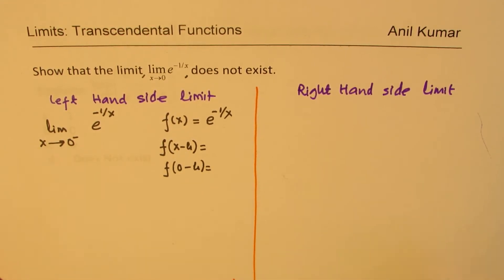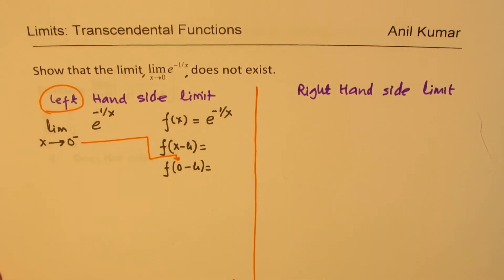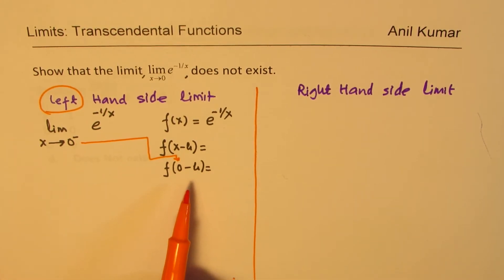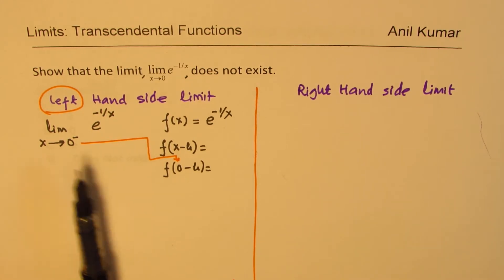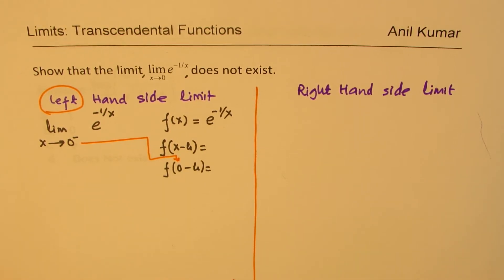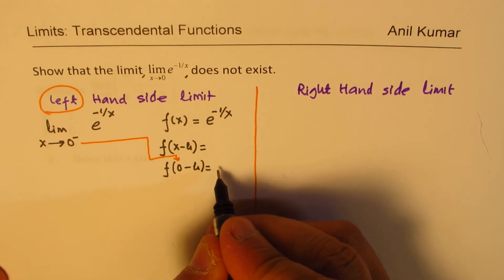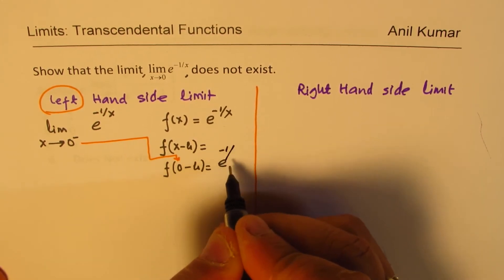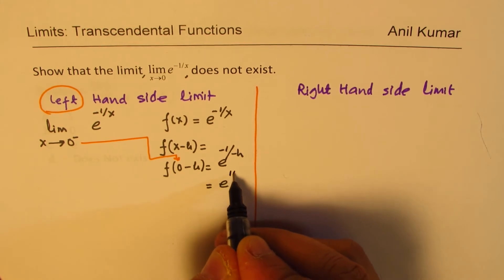Approaching from the left really means x minus h, but since x is approaching 0, we connect it with 0. Minus means you are on the left side. So we will write the limit of this function when it is approaching from the left side. Using this notation, if I write minus h here, I have to replace x with 0 minus h, which gives e to the power of minus 1 over minus h — the negatives cancel — giving e to the power of 1 over h.